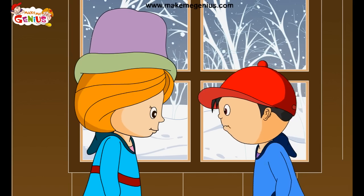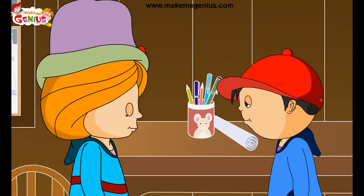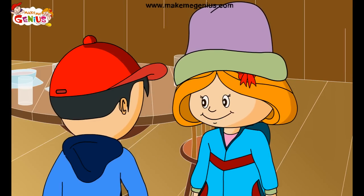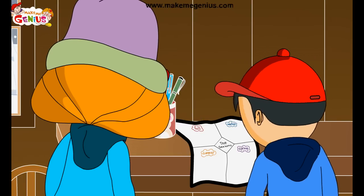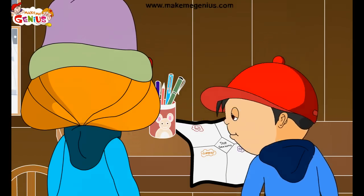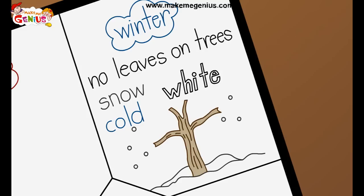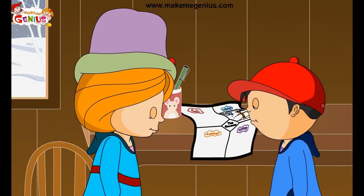Let me divide this into four parts for four seasons. This looks nice. Let me write what happens in winter season. You have covered everything: no leaves on trees, there is snowfall, it is cold and white outside, and we wear jackets and caps to save ourselves from the cold.